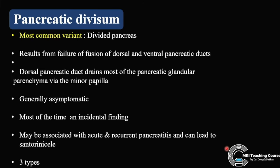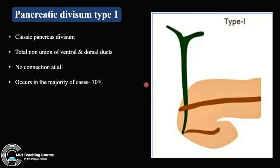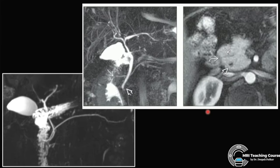Pancreatic divisum is the most common variant — it is literally a divided pancreas, resulting from failure of fusion of the dorsal and ventral pancreatic ducts. The dorsal pancreatic duct drains most of the pancreatic glandular parenchyma via the minor papilla. It is generally asymptomatic and an incidental finding, but may be associated with acute and recurrent pancreatitis and can lead to Santorini seal. Type 1 is classic pancreatic divisum: total non-union of ventral and dorsal ducts, occurring in majority of cases (~70%).